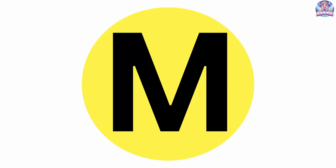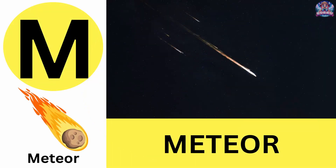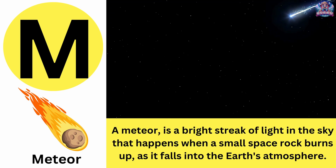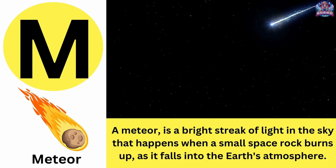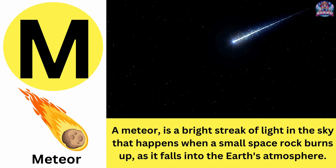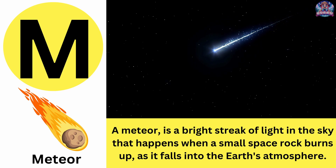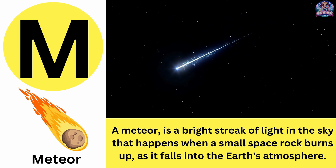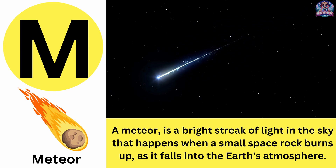M. M is for meteor. A meteor is a bright streak of light in the sky that happens when a small space rock burns up as it falls into the Earth's atmosphere. Meteor.